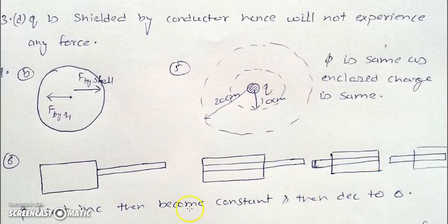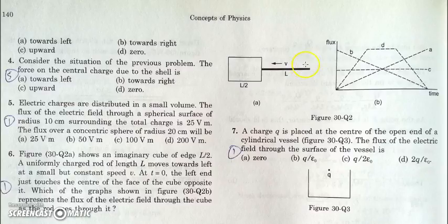So flux will first increase, then become constant, then decrease. And the rate of change of flux will be constant as the rod is moving with a constant speed. So the correct option will be this. Flux is increasing at a constant rate, then become constant for some time, and then decrease to zero again at the same constant rate. So option D is correct.